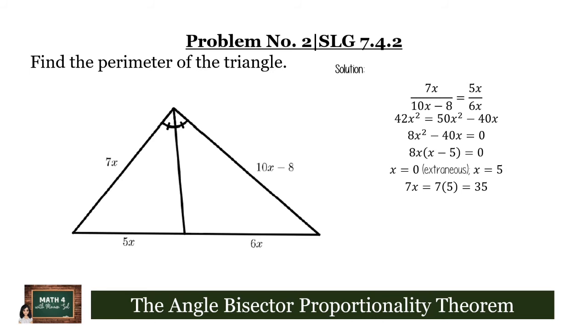If x is equal to 5, we can plug it in now. We will have 7x is equal to 7 times 5 equals 35. 5x is equal to 5 times 5, which is 25. 6x is equal to 6 times 5, which is 30. And lastly, 10x minus 8 is equal to 10 times 5, which is 50 minus 8, which will now be 42.